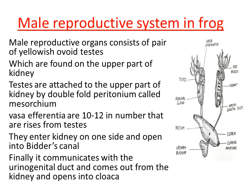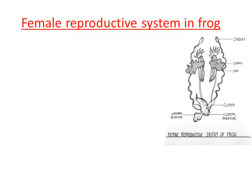Let us now discuss about the female reproductive system in the frog. The diagram on the screen shows the female reproductive system in frog. The main organs of the female reproductive system are a pair of ovaries.